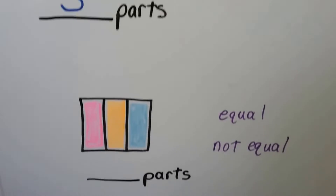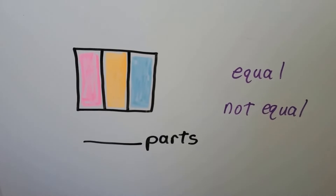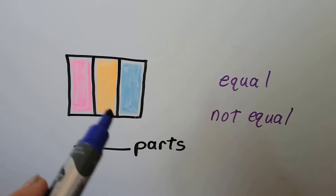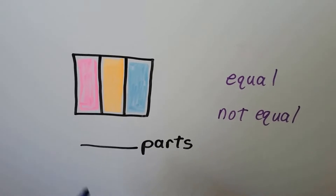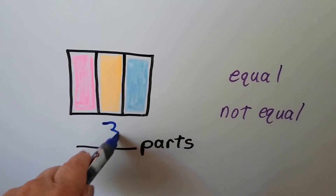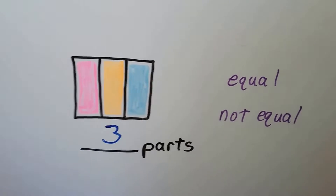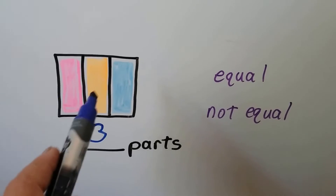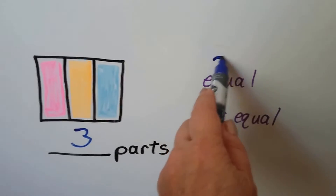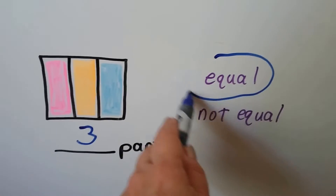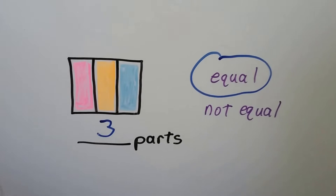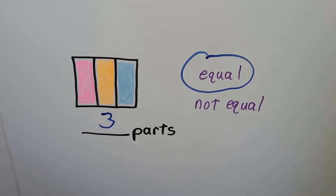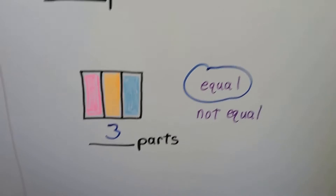How about this rectangle? Let's count the parts: one, two, three — three equal parts. They're all the same size and shape. Equal parts are the same size and shape.